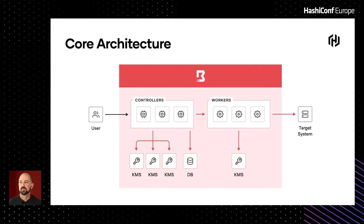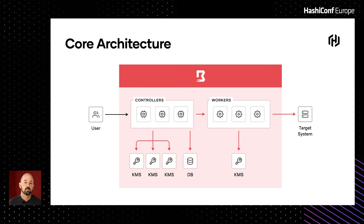Jim is going to talk about core architecture and how we put those principles into actual practice when building the product. Boundary's architecture is basically a control plane and a data plane. The control plane has controllers and KMSs — multiple KMSs for different purposes — plus a database. On the data plane, there are basically just workers and a KMS, which is shared between the controller and the data plane for authentication.